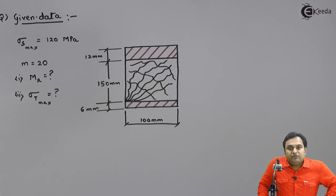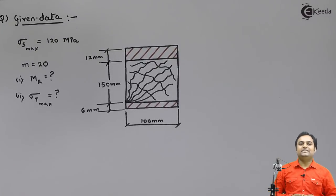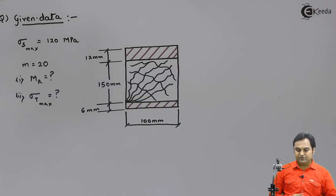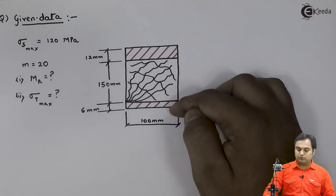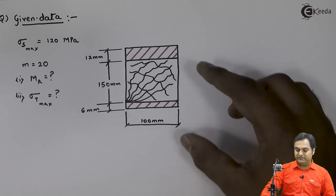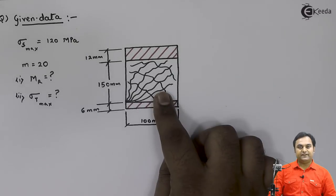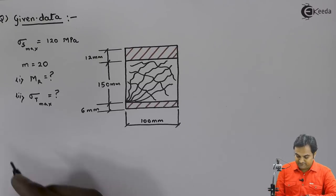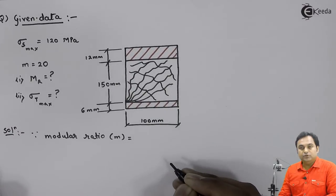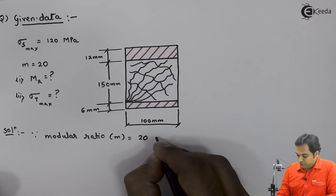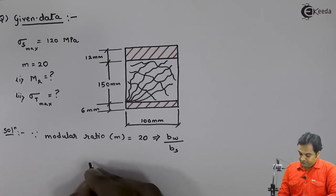Whenever a problem of a flitch beam is given, first try to get the location of the neutral axis — the axis over which the bending stress is zero. What I will do is replace the wood section with an equivalent steel section, so that throughout we have only steel. This is done using the modular ratio: m = E_wood / E_steel = 20.